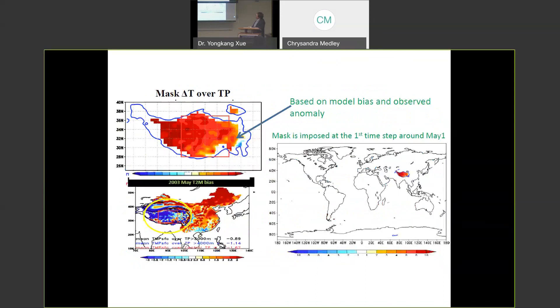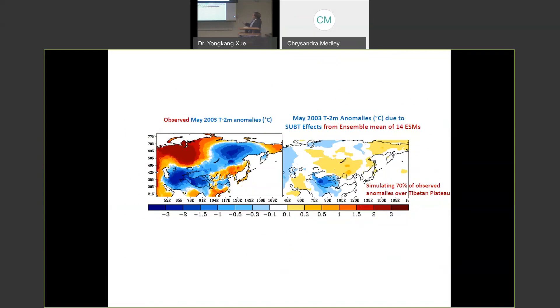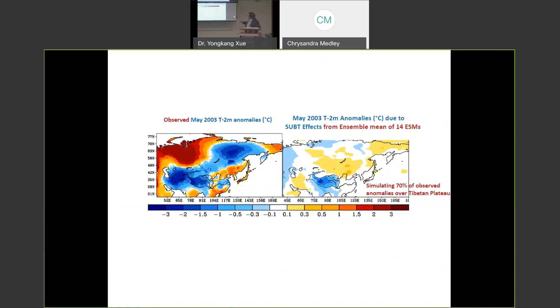So the task 3 is the main task. Then, we try to, for instance, we try to improve the model. So for instance, this model, 2003 was cold, but this model is very cold. So for this model, try to improve this cold bias, we impose a warm mask over Tibetan Plateau for the first time step. So of course, eventually, they use some imposed warm mask, some imposed cold bias mask. So eventually, we have, so far, we have 14 model results. So 14 model, the ensemble mean, produce 70 percent observed anomaly. But in Siberia, this anomaly was not produced. It's apparently, this anomaly is not produced by the Tibetan Plateau.